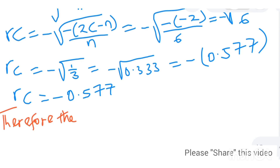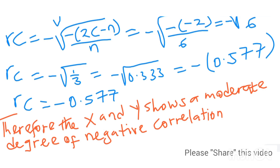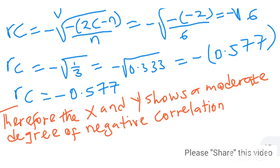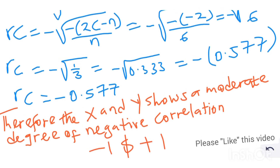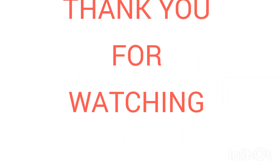The coefficient of correlation by the concurrent deviation method is minus 0.577, meaning X and Y show a moderate degree of negative correlation. Like Pearson's and Spearman's rank correlation coefficient, the coefficient of concurrent deviation also lies between negative 1 and positive 1. Please don't forget to hit the subscribe button and turn on the notification bell. Thank you for watching this video, bye.